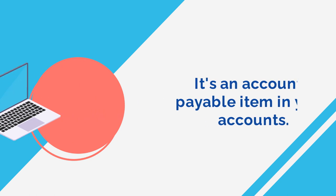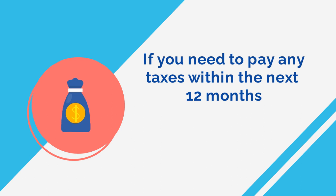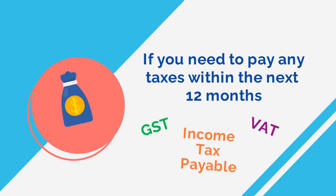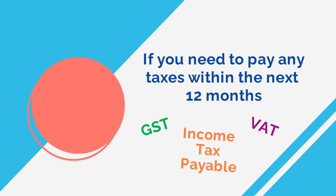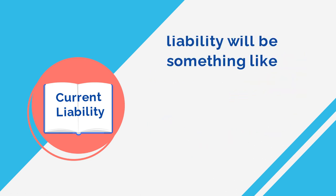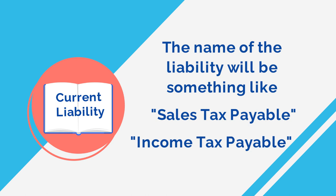Similarly, if you need to pay any taxes within the next 12 months — whether it be GST, VAT, income tax, or anything else — the obligation to pay is recorded in your books as a current liability. The name of the liability will be something like sales tax payable or income tax payable, depending on the type of tax you need to pay.